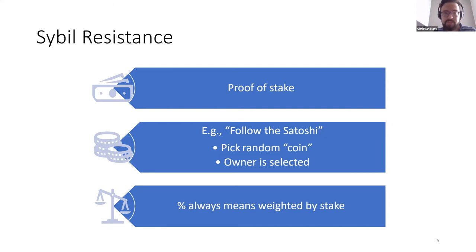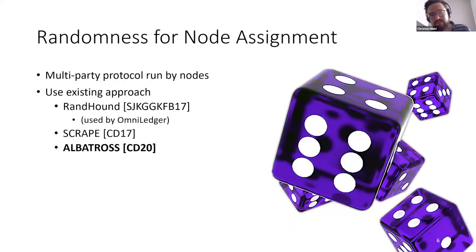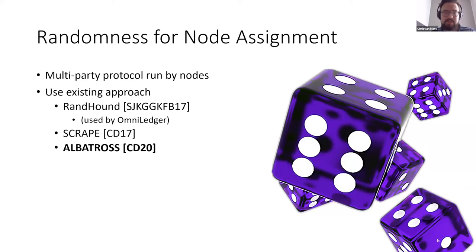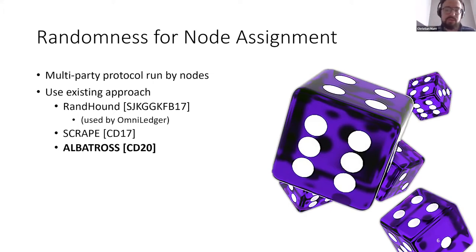Another thing I don't really want to go into is how to generate the randomness for assigning the shards — this is a topic in itself and there are different papers discussing different approaches. Essentially with our setting you can use most of these approaches; it doesn't matter much. Examples of existing protocols that run some multi-party protocol among nodes to guarantee a random output for node assignment — without malicious parties influencing the randomness too much — include RandHound, which is used by OmniLedger, also SCRAPE, and more recently ALBATROSS. In the paper we use the formalization from ALBATROSS.